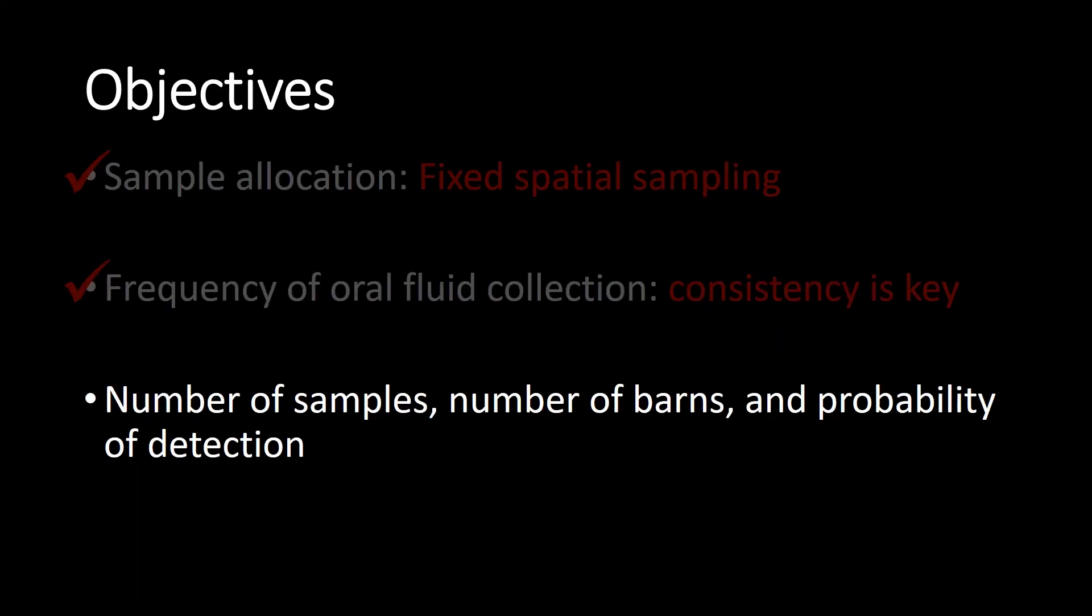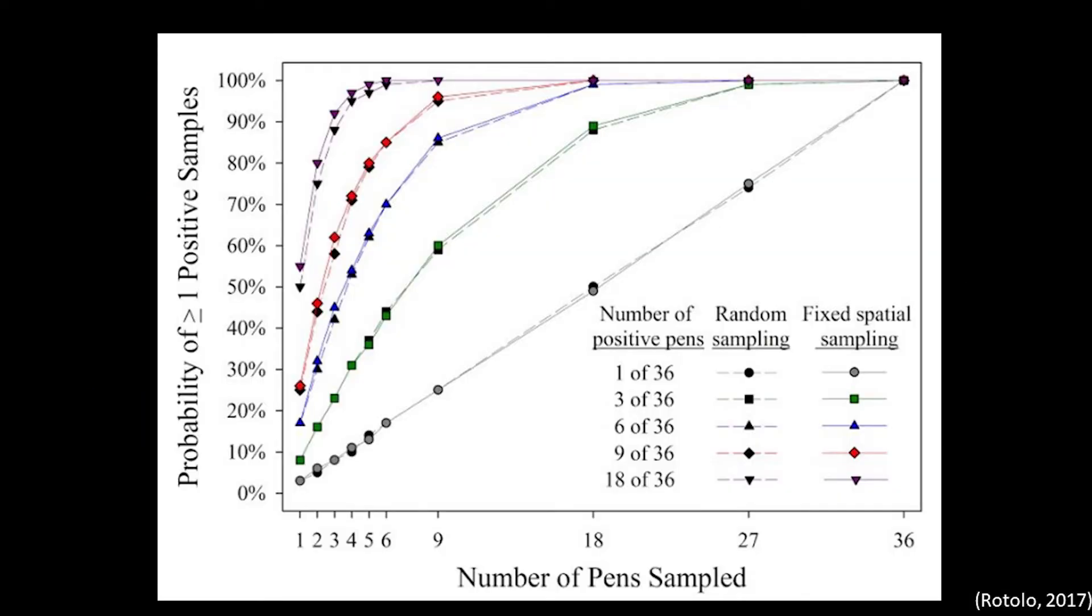Next, let's see how the number of samples collected affects the probability of detection. This graph is complicated, so let's walk through this slowly. Later, we will show you why these numbers are important and how to use the information. The graph shows the probability of detection based on sample size, disease prevalence within a barn, and sample allocation in the barn.